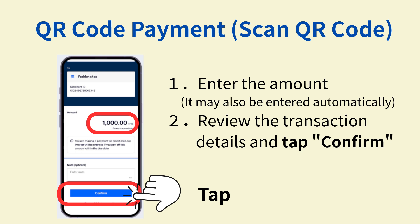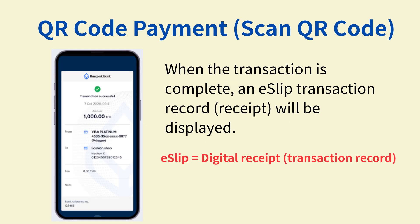Enter the payment amount. In some cases, the amount will be displayed automatically. Next, review the transaction details and tap Confirm to complete the payment. When the transaction is complete, an e-slip — a transaction record or receipt — will be displayed. This e-slip can be used as a digital receipt.